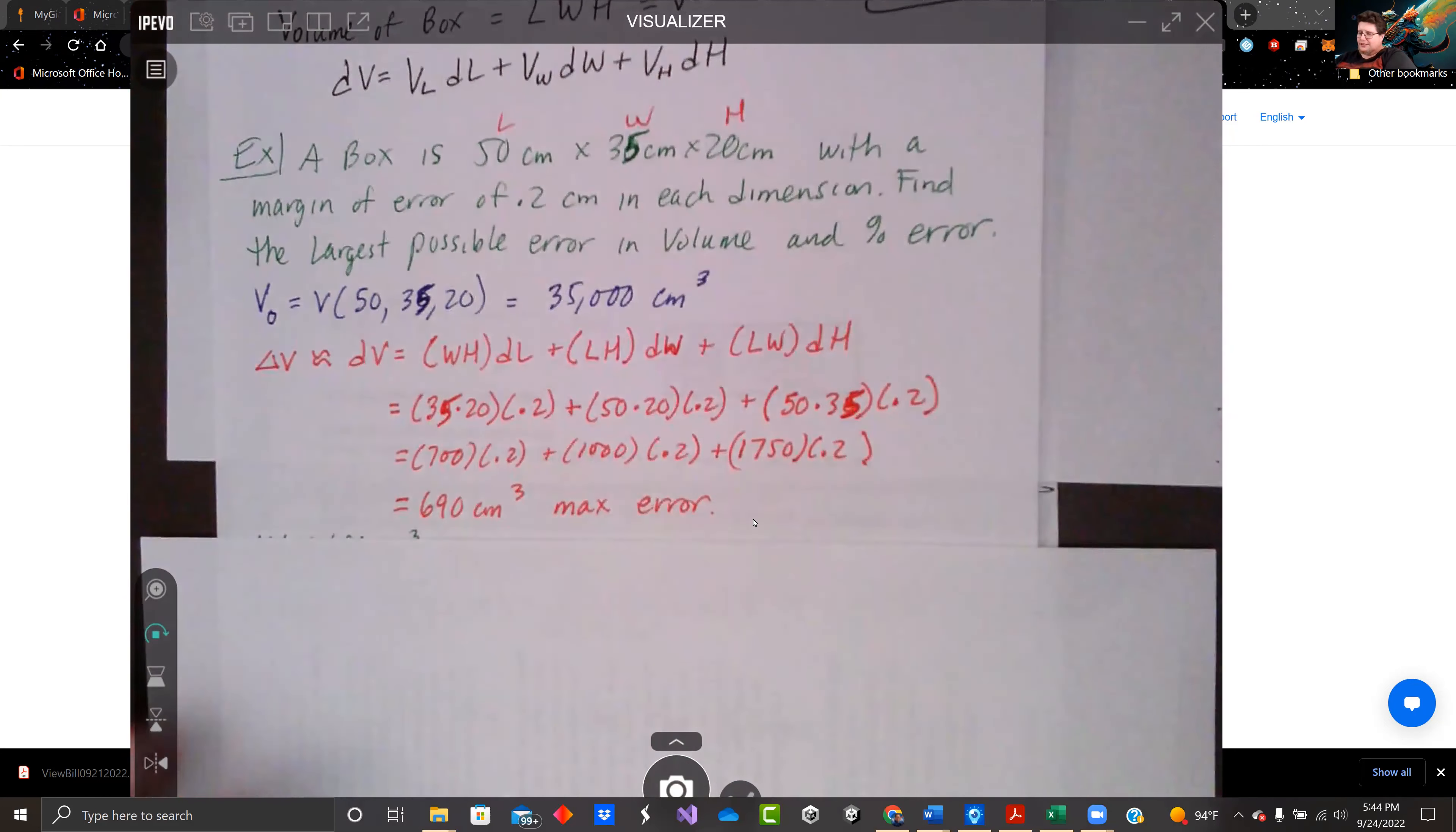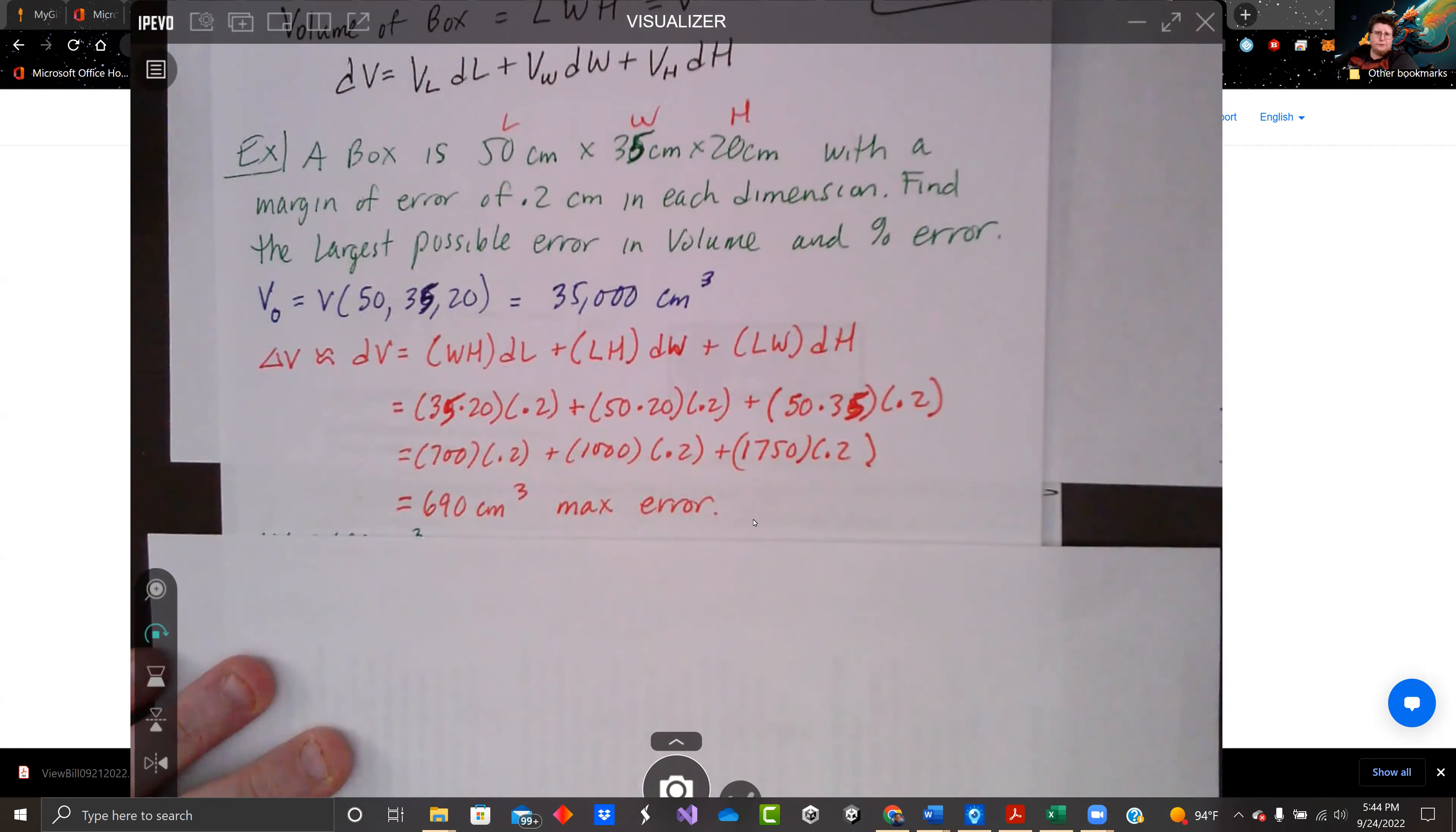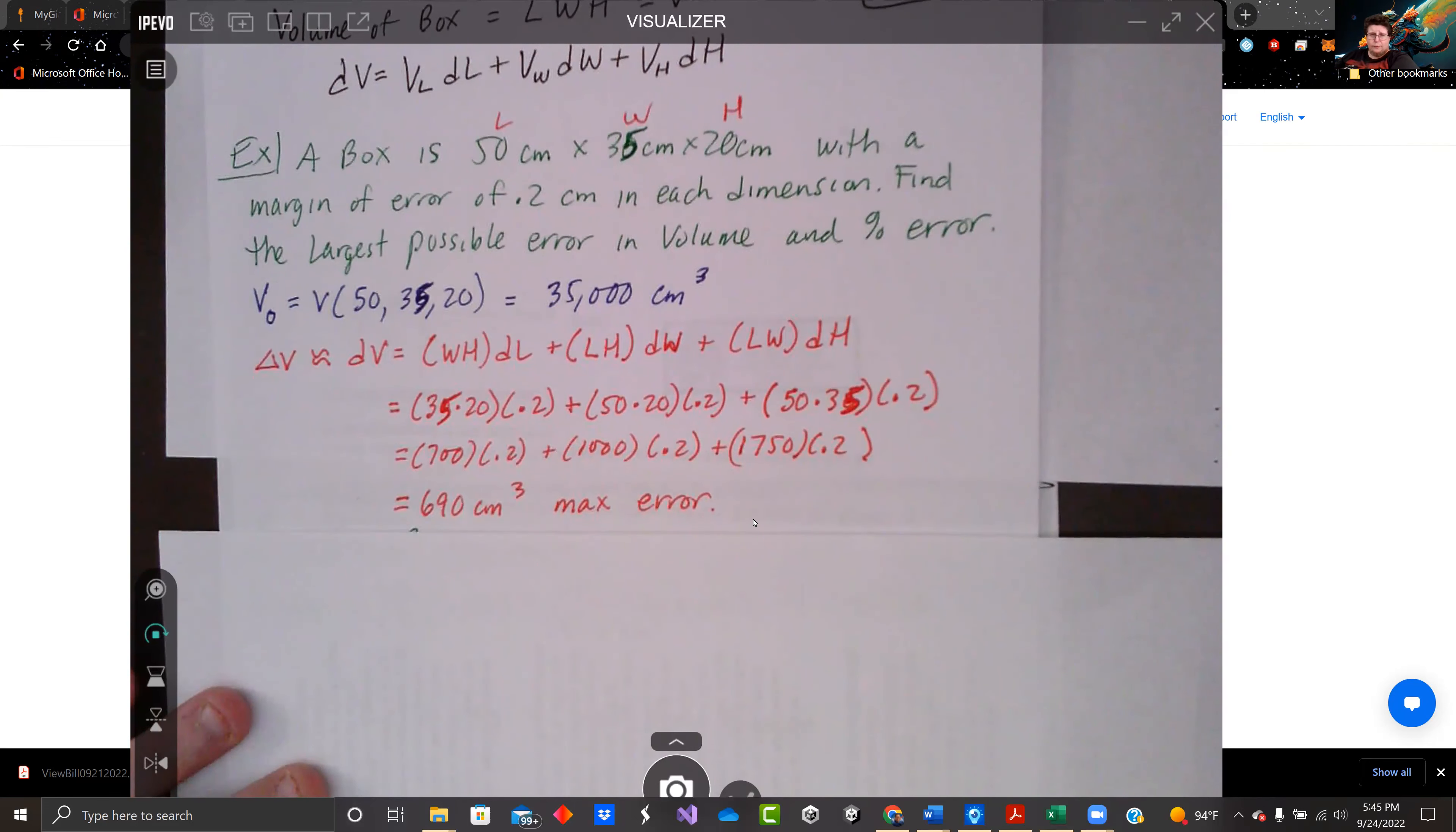Now let's approximate delta V using dV. So the derivative of V with respect to L is just WH. The partial of V with respect to W is LH, and partial of V with respect to H is LW. We plug those in right there. That's our formula that we're using for delta V. We plug in our values: the 50, the 35, the 20. We're saying 0.2 centimeters is the maximum or the margin of error on each of the things. And if we calculate it, we're going to get 690 cubic centimeters.